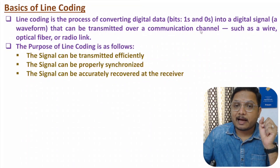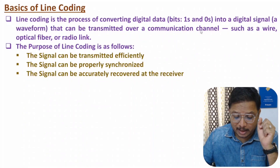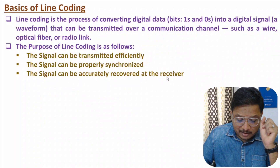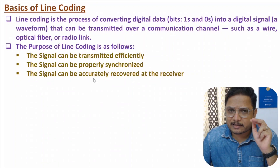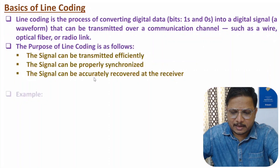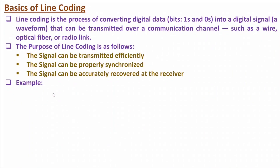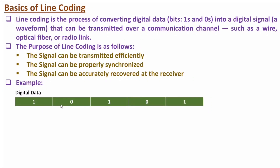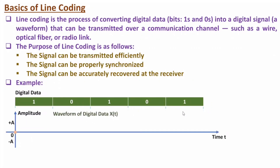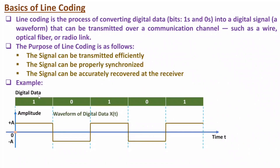At the receiver side there should be proper synchronization and the receiver should be able to extract the signal accurately. For example, take the digital data 10101. Using line coding, I represent this in the form of a waveform: logic 1 is represented with plus A amplitude and logic 0 with minus A amplitude. There are many line coding techniques — this is just one example.